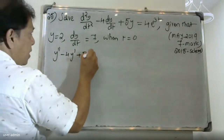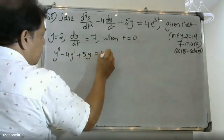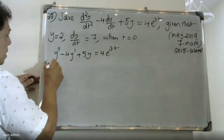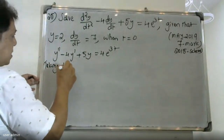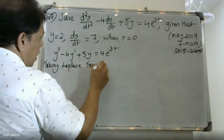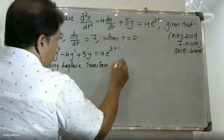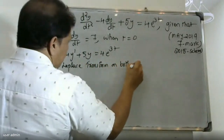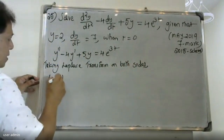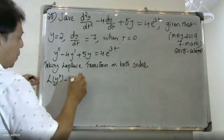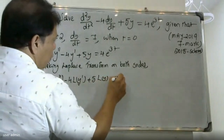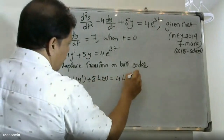For the equation y'' minus 4y' plus 5y equal to 4 times e raised to 3t, we will apply the Laplace transform on both sides. Taking the Laplace transform on both sides, we determine L of y double dash minus 4 times L of y dash plus 5 times L of y equal to 4 times the Laplace transform of e raised to 3t.